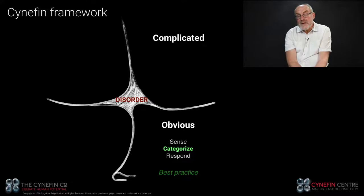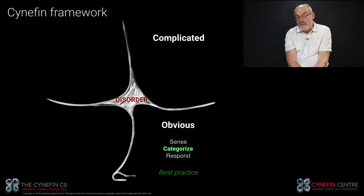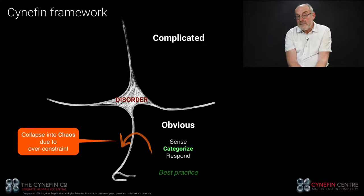The decision model in the obvious domain is sense, categorize, respond — which country am I in? It's the UK, that falls into the category of left-hand driving, so I drive on the left. It's standard operating procedures, doctrine in the army. Over-constraining leads to a collapse into chaos, because you're creating a constraint that is impossible. If you said you must never drive on the right in the UK, then if a child runs into the road, you'd have to kill them rather than avoid them. Even the most rigid systems should allow for exceptions.